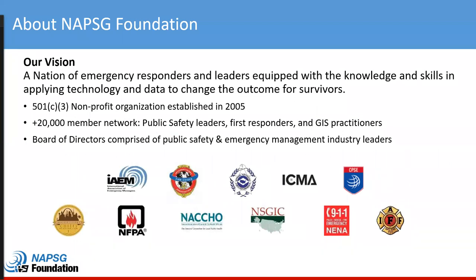For those who are new to our organization, National Alliance for Public Safety GIS Foundation is a 501c3 nonprofit organization. We have a national network of over 20,000 members, both public safety and GIS practitioners alike, representing local, state, tribal, and county levels. Our organization is governed by an independent board of directors that are primarily public safety practitioners with 30-plus years of experience in the field.